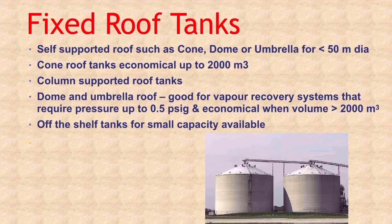Self-supporting roofs have a steeper roof and are generally found on smaller tanks. API 12D tanks, API 12F tanks, and UL 142 tanks can be purchased off the shelf and are economically available at capacities up to 10,000 barrels.